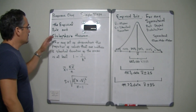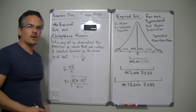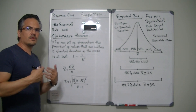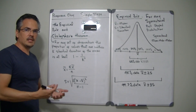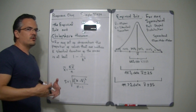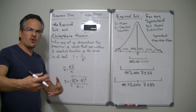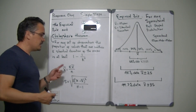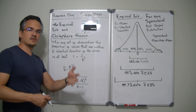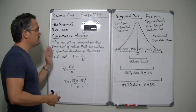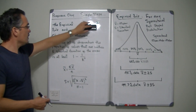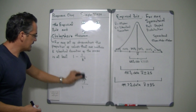Chebyshev and the empirical rule are things that you use in order to come up with quick probabilities, or in order to come up with a quick answer when somebody asks you a question. If you have a mean and a standard deviation, it's pretty easy to make assumptions about the data using Chebyshev and using the empirical rule. So let's analyze those.